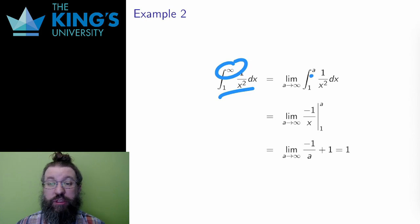I do this the same as before. I integrate from 1 to a, which is valid, and then I take the limit as a goes to infinity. The antiderivative here is another inverse power rule, leading to negative 1 over x. And evaluated from 1 to a, this is just negative 1 over a plus 1.